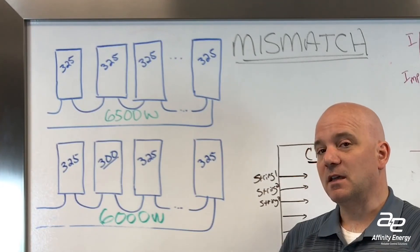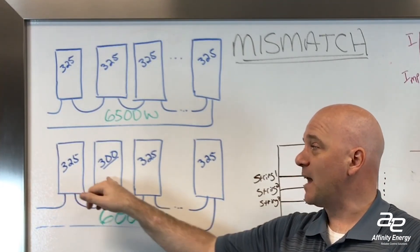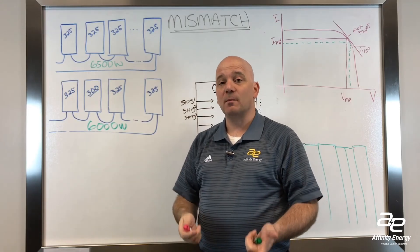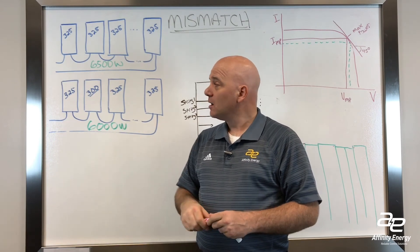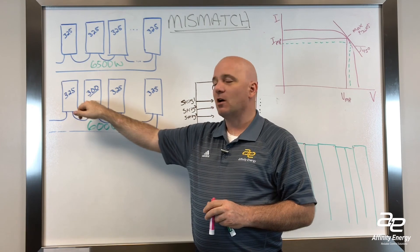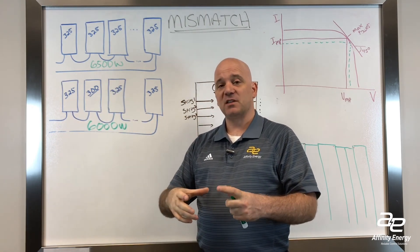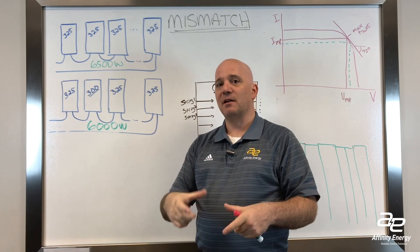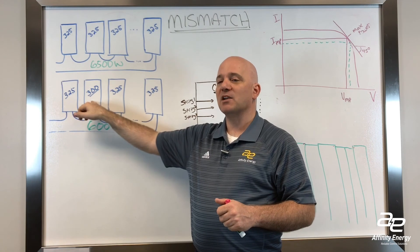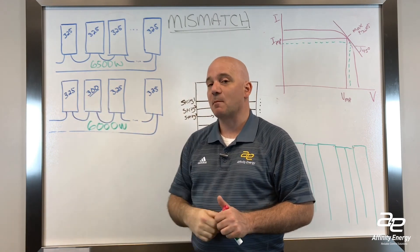The other thing that isn't obvious, but you might pick up on here, is that module mismatch going from 325 to 300 back to 325 is a rather dramatic difference. But a module that's underperforming could be caused by something as small as a cracked module, some hydraulic fluid left over from the construction process, or a soiling condition affecting one module amongst the string — and that will have the same effect as having a mismatched module.